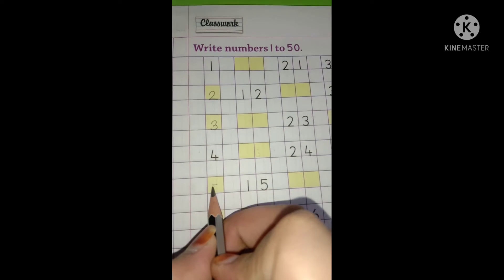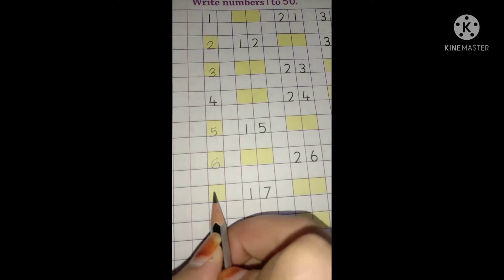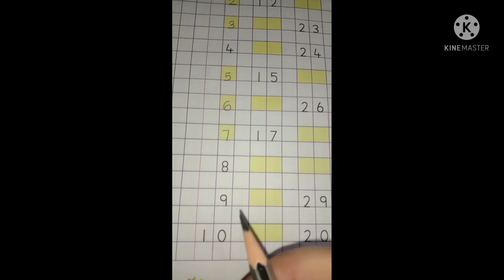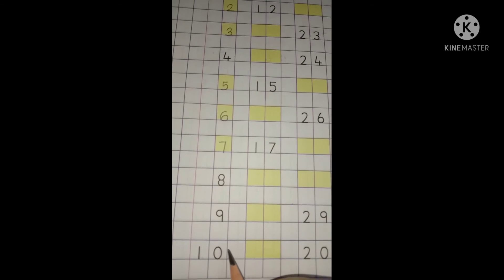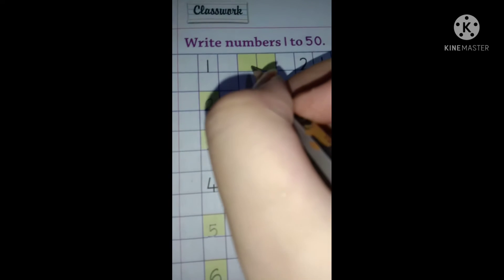3, 4, 5, 6, 7, 8, 9, 10. Now what comes after 10? It's number 11, so we will write here 11.